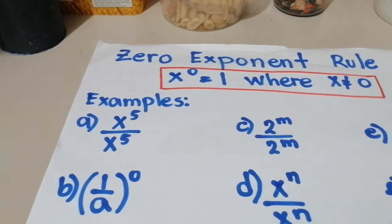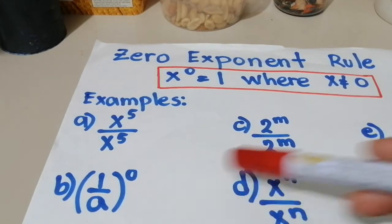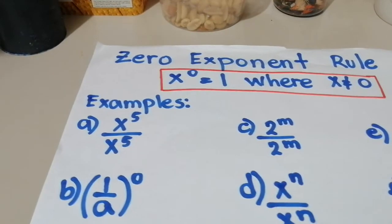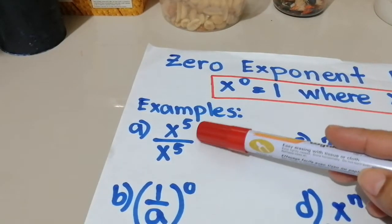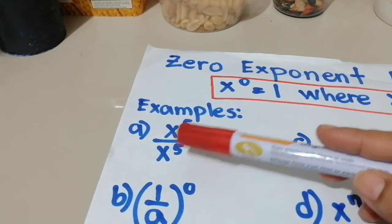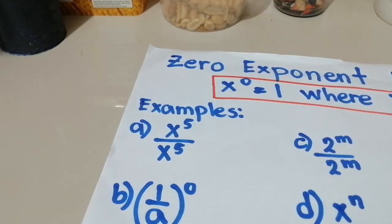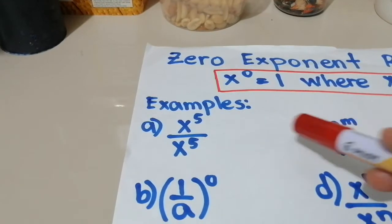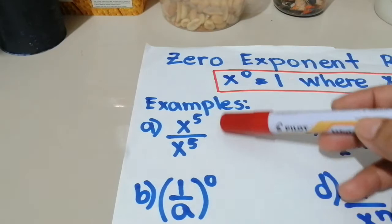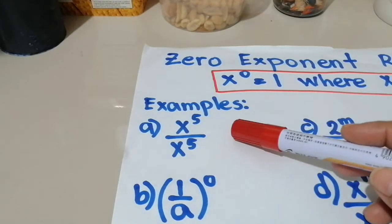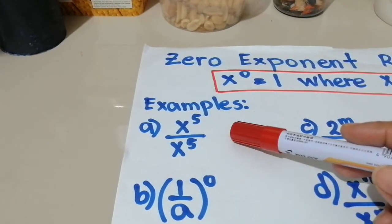To further understand what I'm saying, let's take a look at these examples. For this one, letter A, x raised to the 5th power over x raised to the 5th power. So for this example, what kind of rule is this one? This is the division rule or the quotient rule.